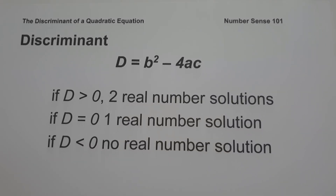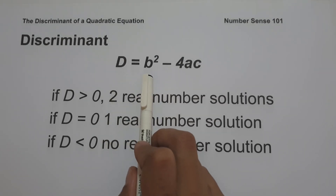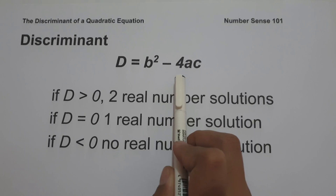For today's video, we are going to talk about the discriminant of a quadratic equation. The discriminant is the radicand, or expression under the radical sign, of the quadratic formula. It is denoted by capital letter D and it can be used to determine the number of real number solutions to a quadratic equation. The formula for the discriminant is D equals B squared minus 4AC.